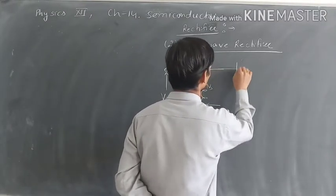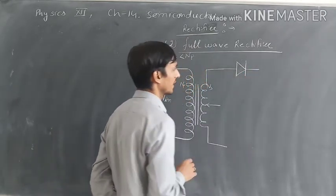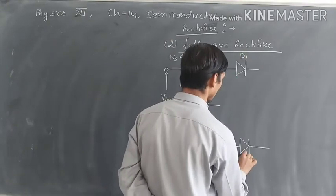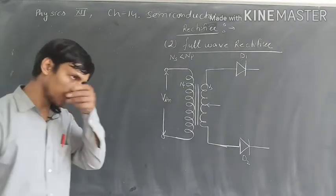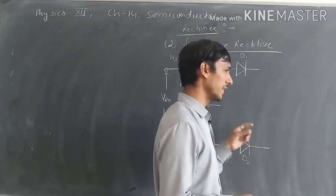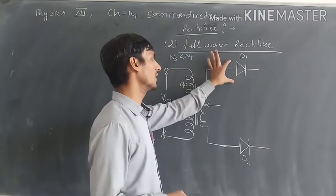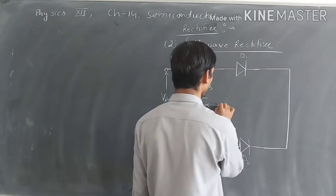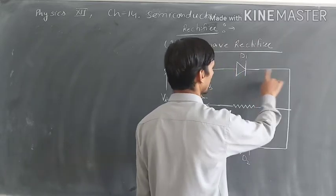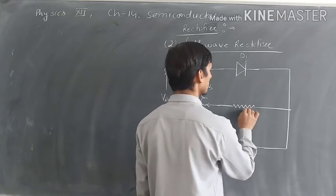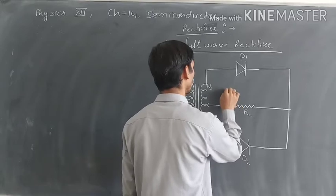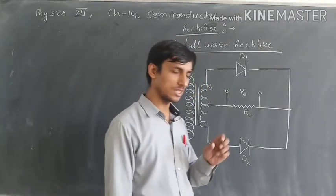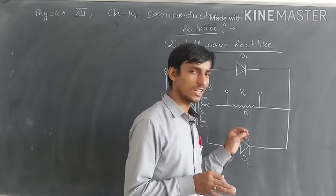We have a center tap connection — the midpoint of this transformer is shorted with the output. Then we have two diodes: this is diode D1 and this is diode D2. In half wave rectifier we had only one diode D1, but in this center tap full wave rectifier we have two diodes — D1 in this wire and D2 in this wire. The output is taken from the N side of the diodes and this center tap, across RL. This is Vout. In your NCERT book the diagram is a bit different, but the actual connection is exactly the same.